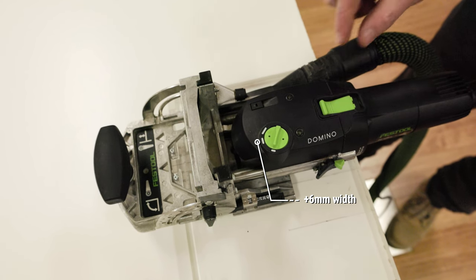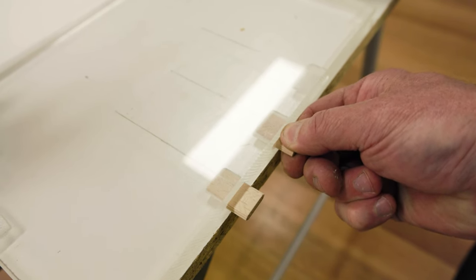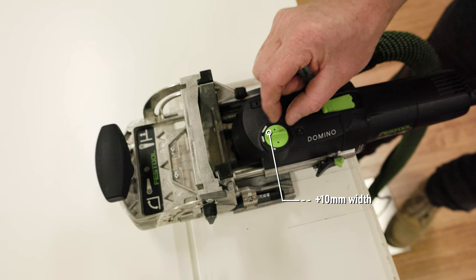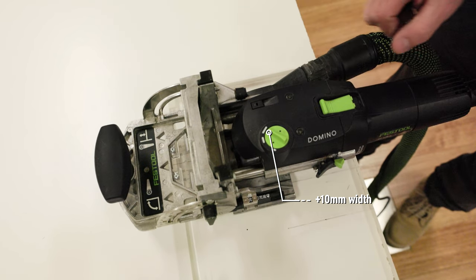In the middle position, the mortise slot will be 6mm wider. And in the widest position, the mortise slot will be 10mm wider than the domino tenon.